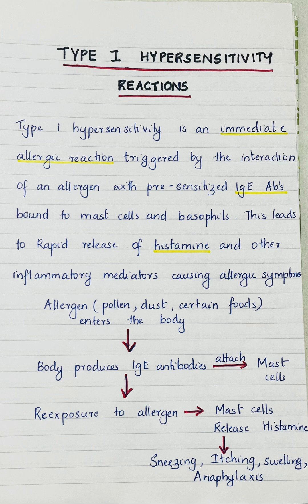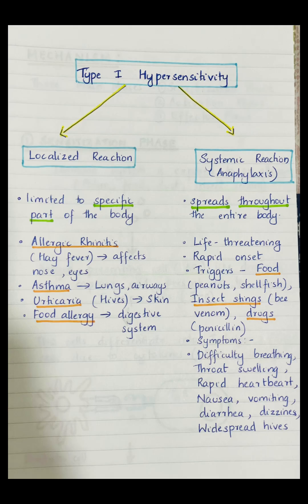This reaction is called an immediate allergic reaction because it occurs rapidly, within seconds to minutes after exposure to the allergen. Clinical manifestations of type 1 hypersensitivity reaction can be classified into two types: localized reaction and systemic reaction.